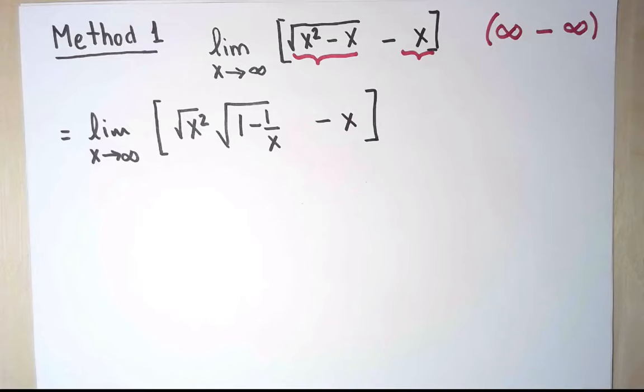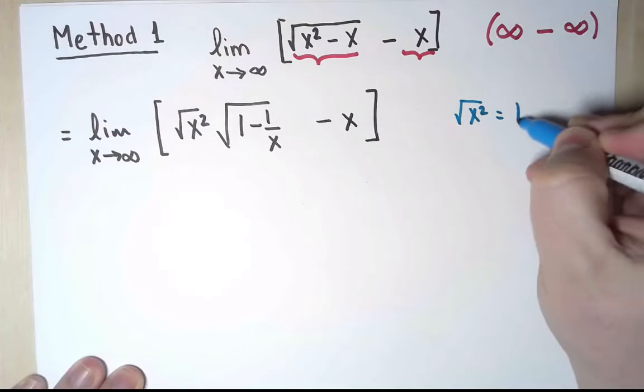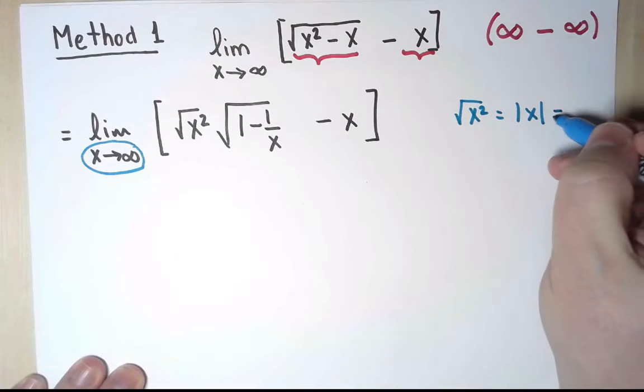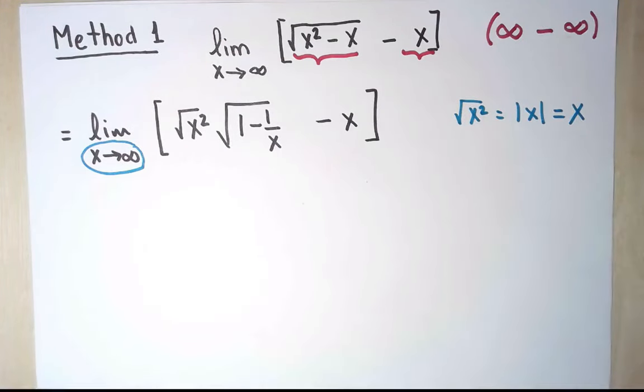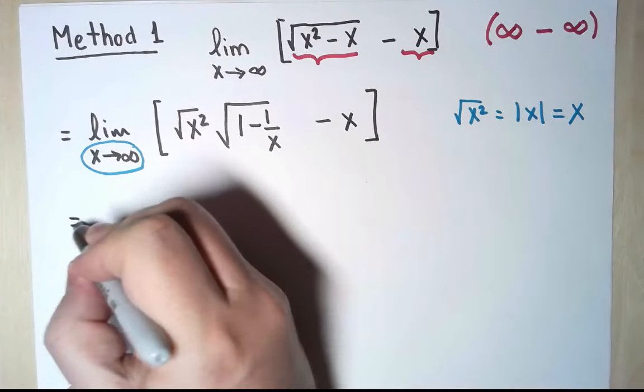And now, the square root of x squared can be simplified. Let's be very careful. In general, the square root of x squared is equal to the absolute value of x. But right here, since I'm taking the limit as x goes to infinity, x will be positive, and therefore that's the same thing as x. So let's simplify it, and once I write this as x, I can take an x common factor. Let's do that.